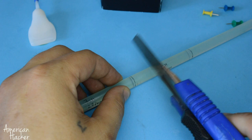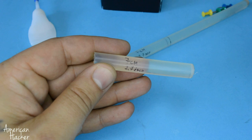From the glue stick we gonna cut two pieces with the same length, 7 cm or 2.7 inches long.